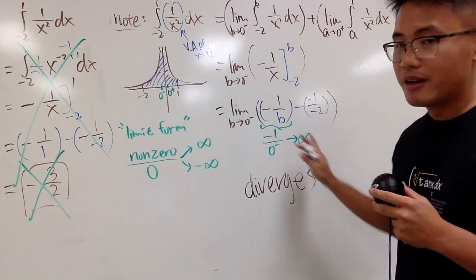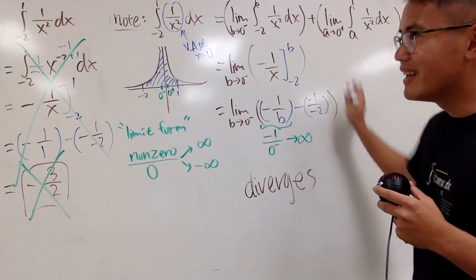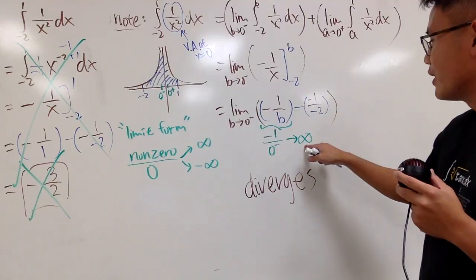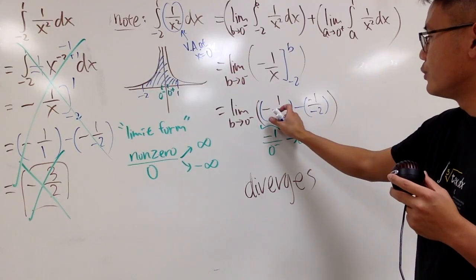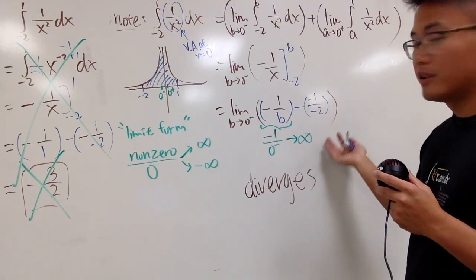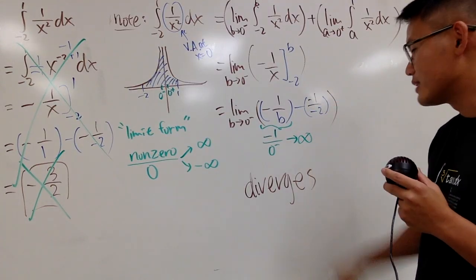I'm not just saying this right here diverges. I'm also saying the whole thing right here diverges. Okay? Once again, you have the infinity right here. This is finite. So, infinity minus 1 half is still infinity. So, this right here for sure diverges.